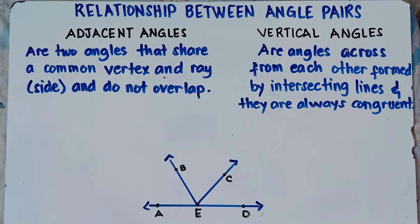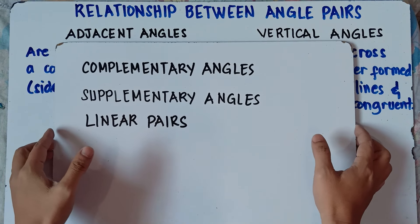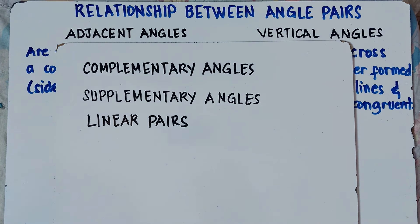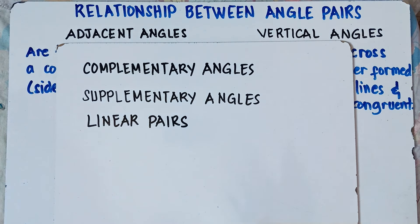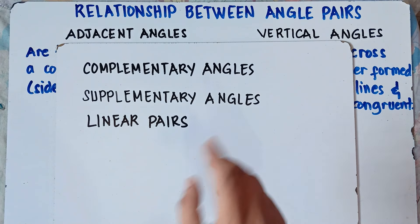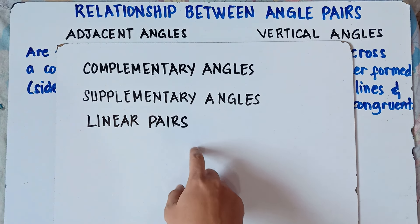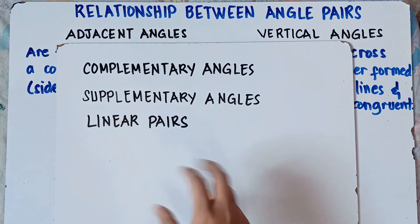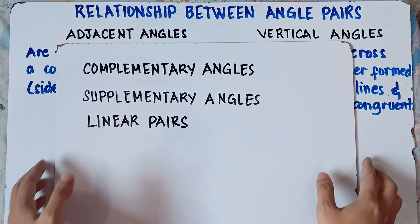Now when we talk about angle pairs, we have adjacent angles, vertical angles, complementary angles, supplementary angles, and linear pairs. In the first part of our video, we'll be focusing on adjacent angles and vertical angles. On the next part of our video, we'll focus on complementary angles, supplementary angles, and linear pairs. For supplementary angles and linear pairs, there are so many students confused with those, so we will explain that on the next part of our video, and I will just put the link in the description down below.